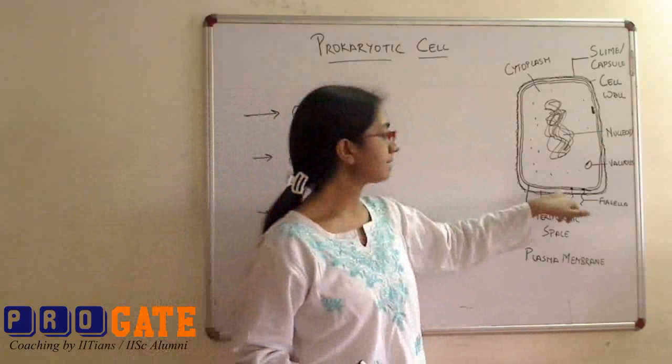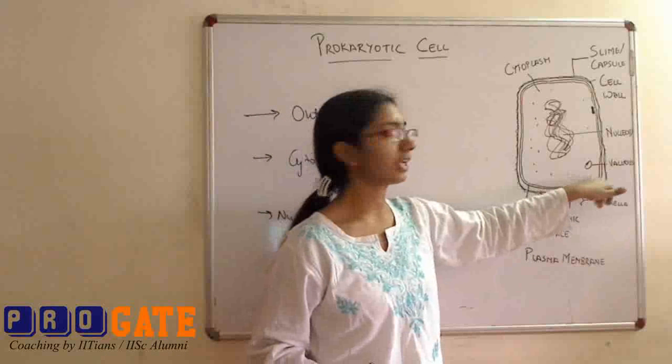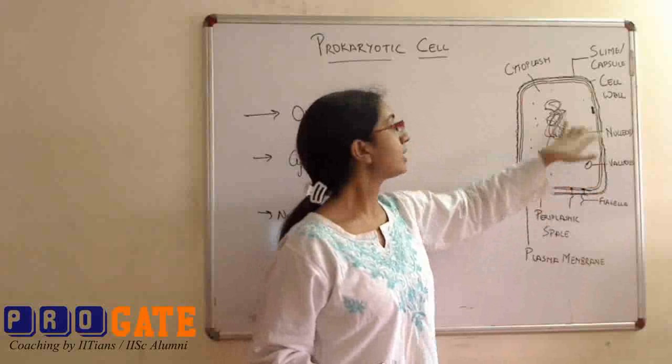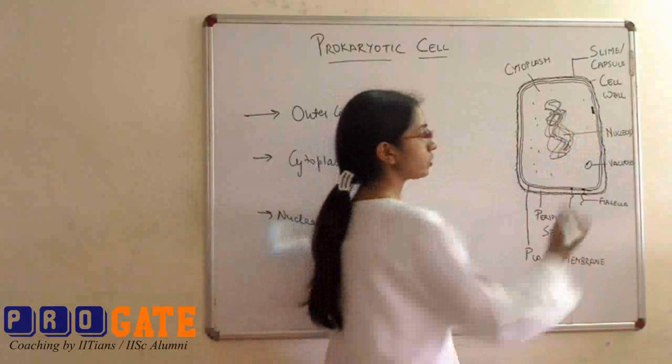Inside the plasma membrane, we have flagella that move out and certain types of vacuoles and other things. In many bacteria, associated with the cell wall is a small structure. These are called mesosomes.